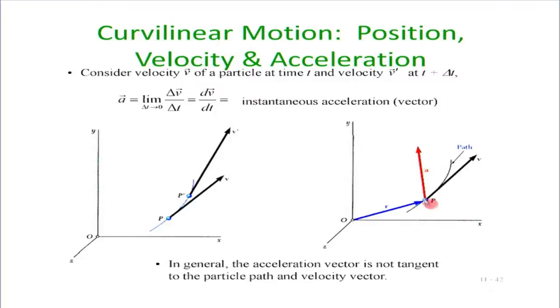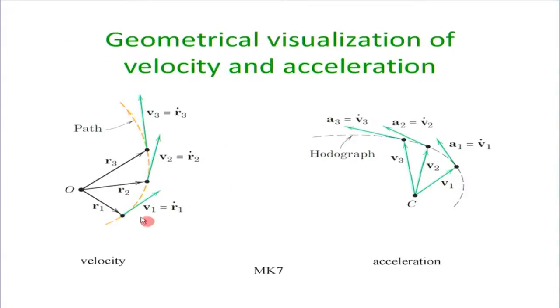At any point, if this is the path of the particle, velocity is always tangential to the path and the acceleration depends on the rate at which the velocity changes. There were a couple of questions about hodograph — please keep in mind that these are not very important. The only thing you need to know is how the velocity direction changes, including both direction and magnitude, which will give us the corresponding acceleration.